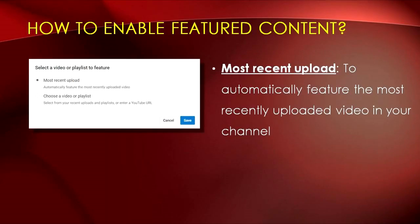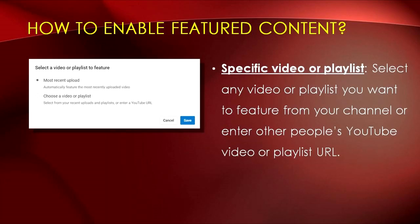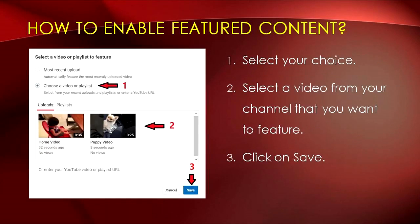Let me briefly explain the two available options you can select from. Most Recent Upload is where you choose to automatically feature the most recently uploaded video in your channel — YouTube will automatically place it in the featured video slot. On the other hand, Specific Videos or Playlists lets you select any video or playlist you want to feature from your channel, or you can enter another person's YouTube video or playlist URL. Once you've chosen, select an existing video from your channel that you want to feature, then click the Save button on the bottom right.